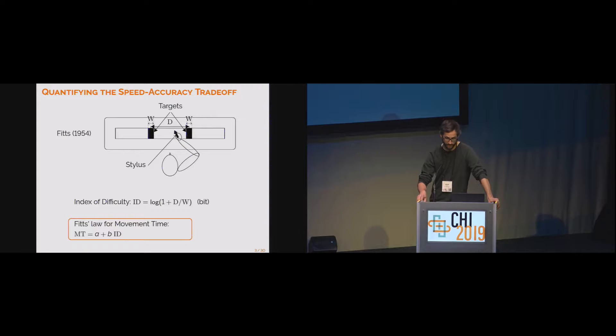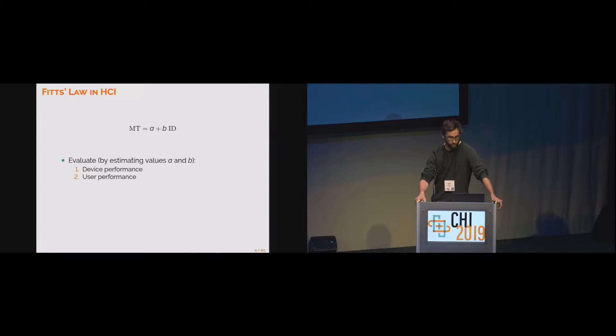This has famously been studied by Fitts. What he did was he made participants sit in front of a board with two targets that have a certain size W, and he made them repeatedly point back and forth between them. Fitts manipulated accuracy by modifying the values of D and W, which is summarized by the index of difficulty. ID is the log of one plus the ratio D over W. He found that the movement time was actually predicted by this index of difficulty, and he found a linear relationship between movement time and index of difficulty.